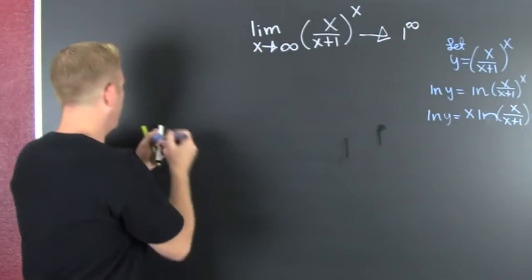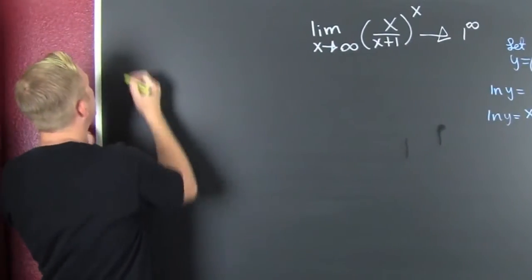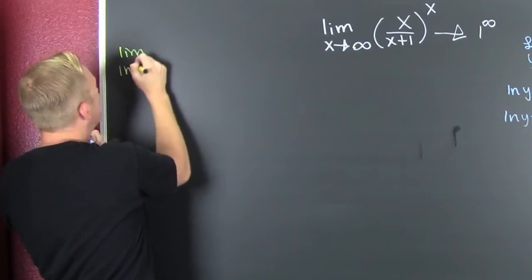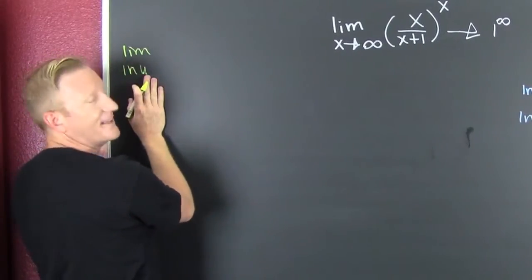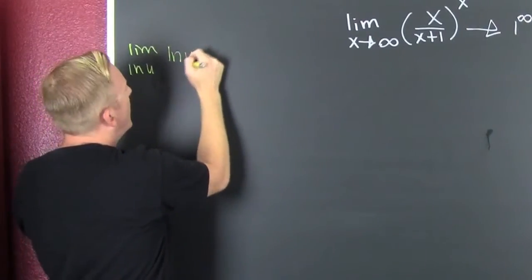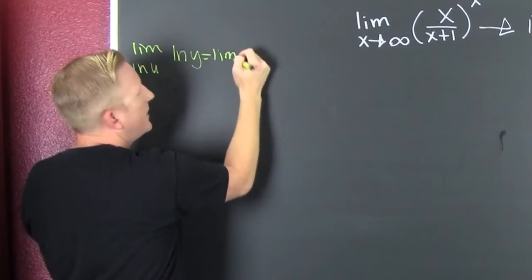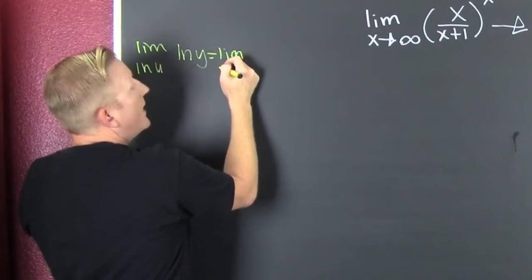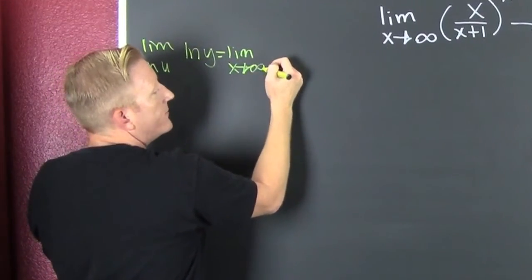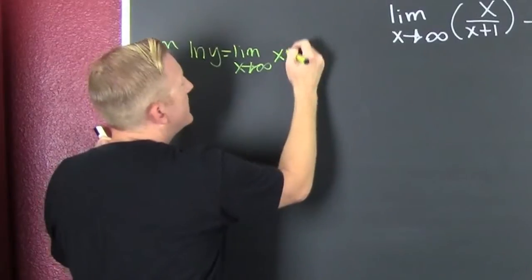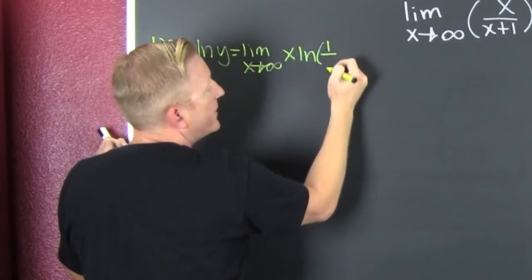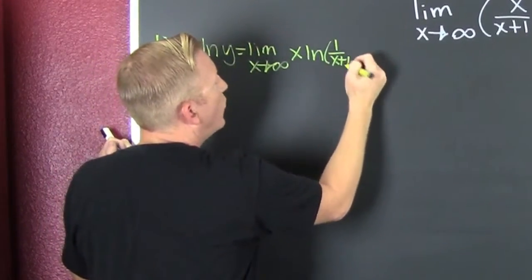Let's do that over here. The natural log of Y is equal to the limit as X goes to infinity of X times the natural log of X over X plus one.